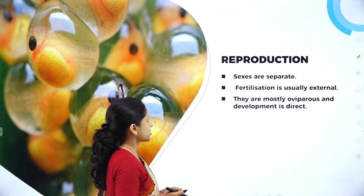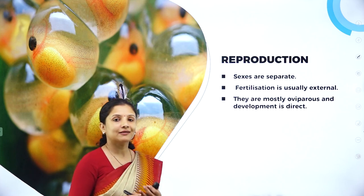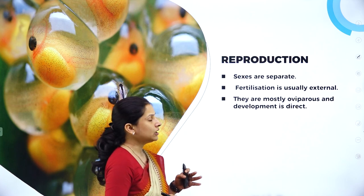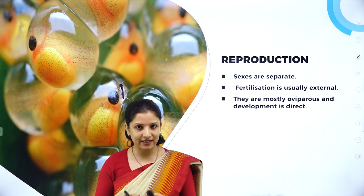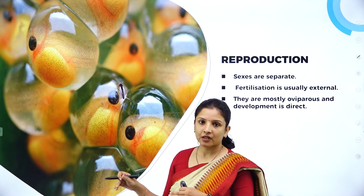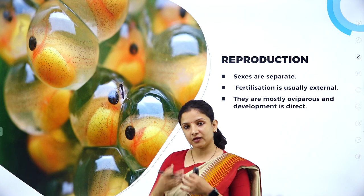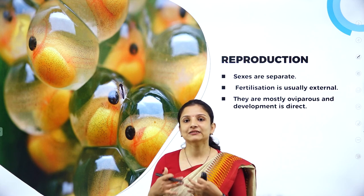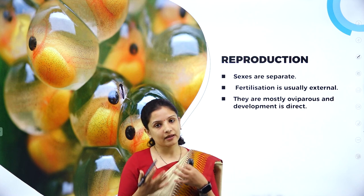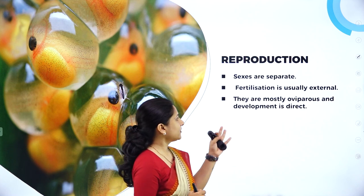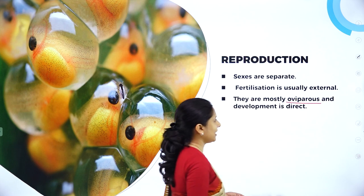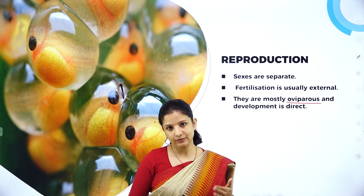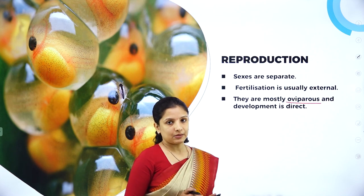Regarding reproduction: the sexes are separate, meaning they are dioecious — the male and female fishes are separate. Fertilization is usually external, wherein the eggs are laid and then sperm fertilizes the egg outside the body in the water. They are mostly oviparous, with direct development without any larval stage in between.